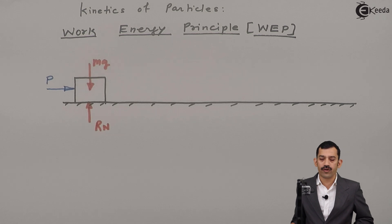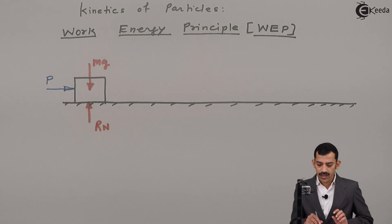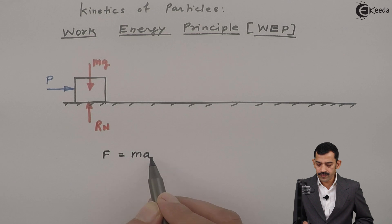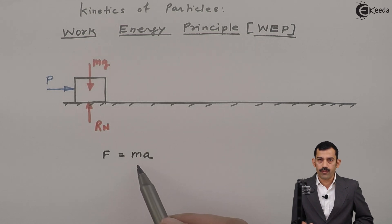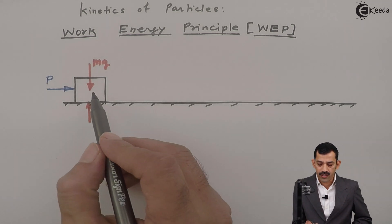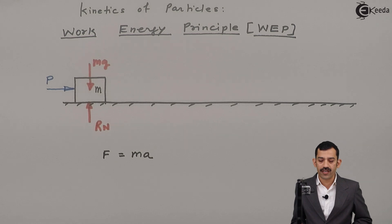As any resultant force acts on a body, the body always accelerates at A meters per second squared, as per Newton's law. As per Newton's law, F equals mass into acceleration. That means whenever a resultant force F acts on a body of mass M kg, the body accelerates at A meters per second squared. As force P acts on this block of mass M kg, the block starts its motion in the rightward direction and accelerates in the rightward direction.